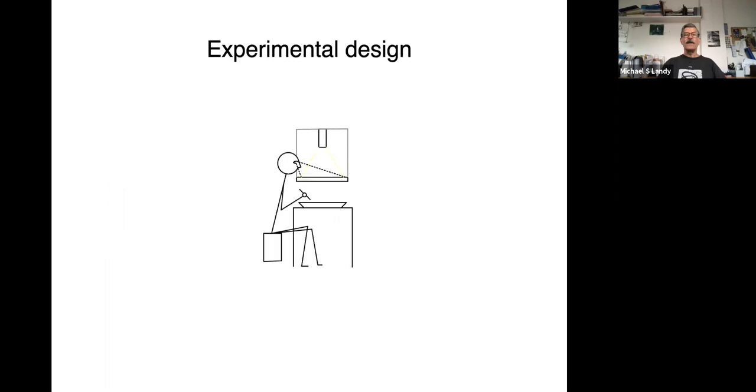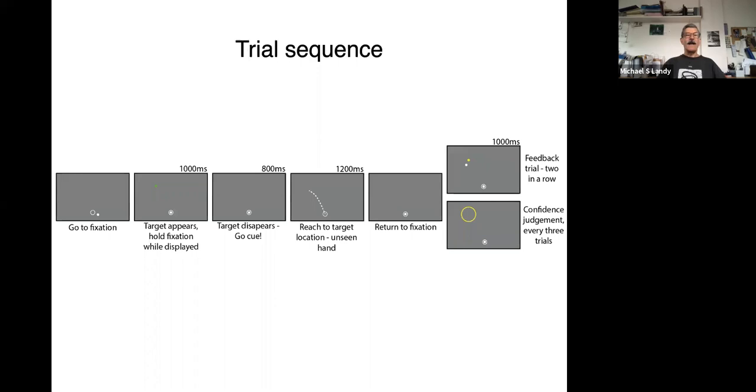Now to do this, here's the setup. You're making a reach on a trackpad using a stylus, but you can't see your arm because there's a mirror in the way. On the mirror, we can project various images using an LCD projector. So we may project a place to move your hand to and your hand, and when your hand gets there, we'll stop giving you feedback of your hand.